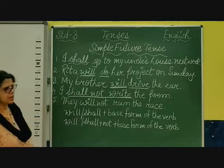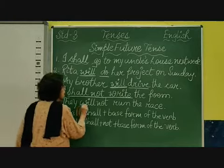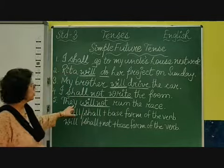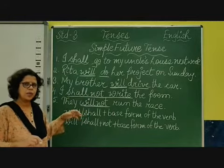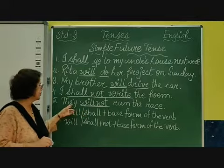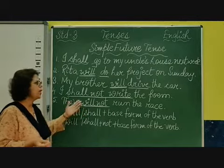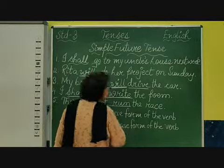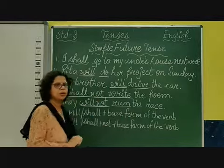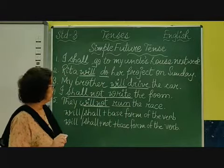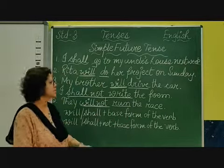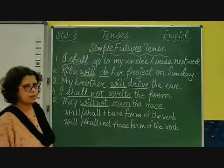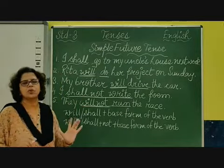Number five: 'They will not run the race.' 'Will not' is negative — by 'not' you can understand it is negative. As I told you, with 'I' and 'we' we use 'shall'; 'they' uses 'will'. 'Will not run' — and you write only the root form of the verb. 'They will not run the race' — 'will not run' is your verb.